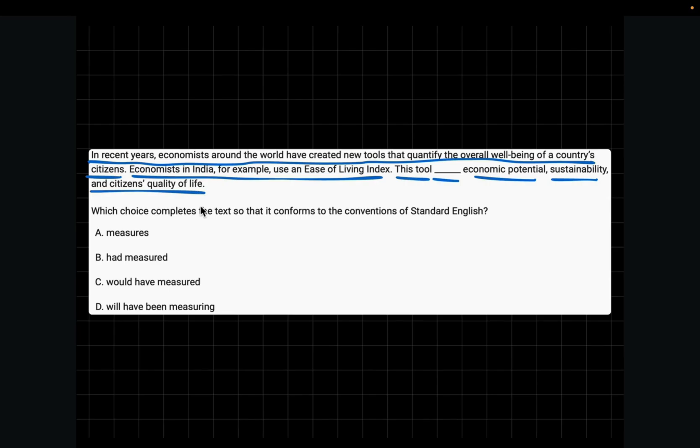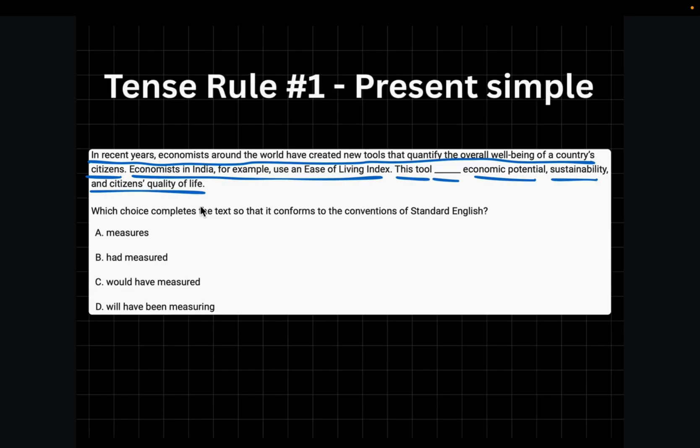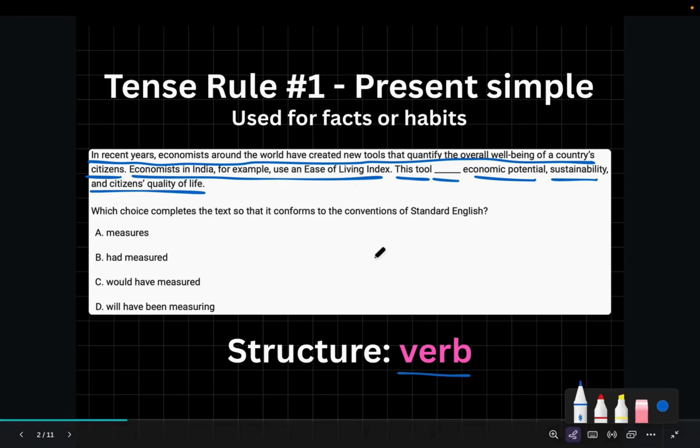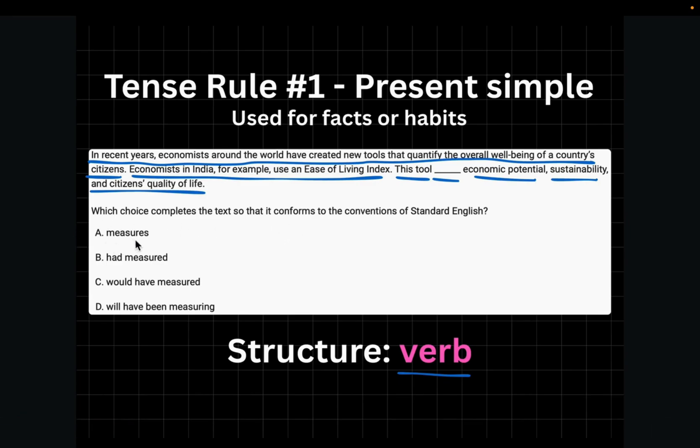So this is a fact. And whenever you have a fact, a current truth, or a habit presented, we use tense rule number one, which is the present simple. Present simple is basically used for facts or habits. The structure of present simple is basically the standalone verb, the verb in its most basic form, which in this case is the word measures. So choice A. By the way, you'll sometimes see some signaling words such as now, usually, or always.